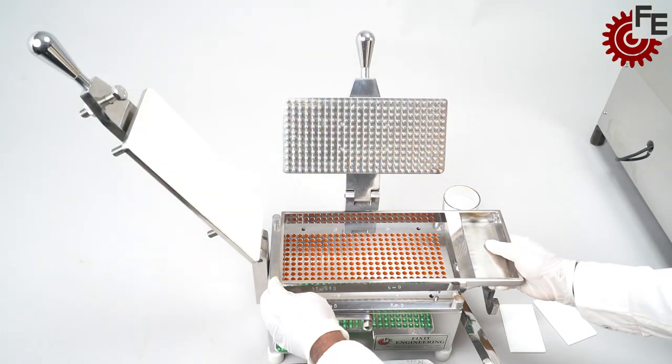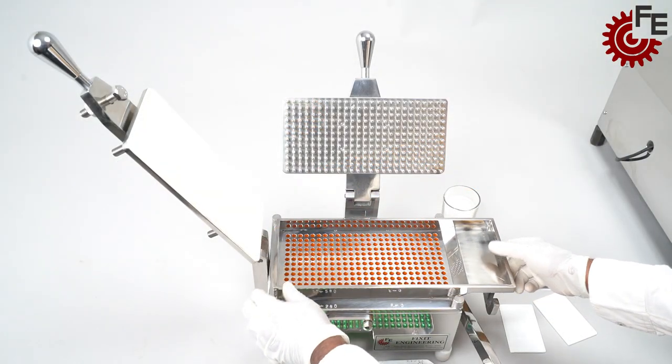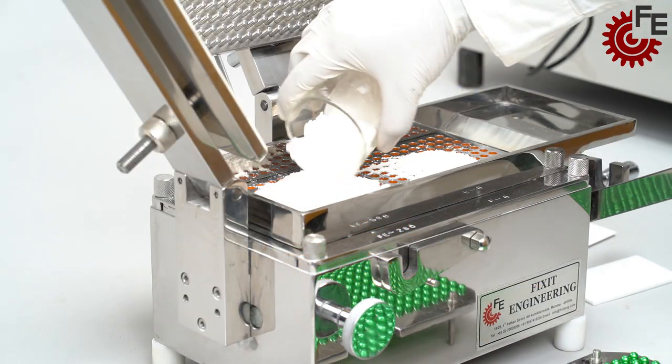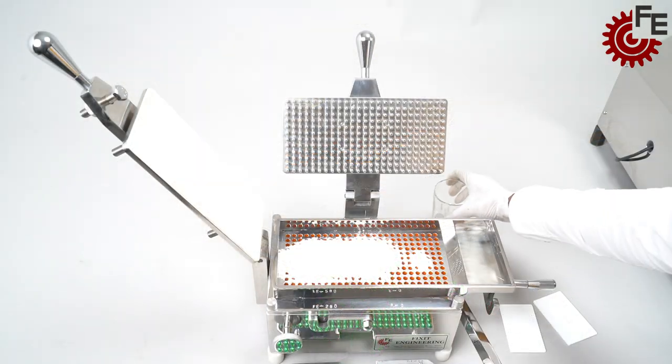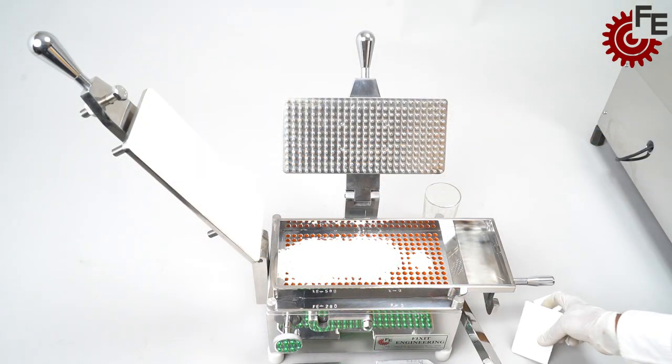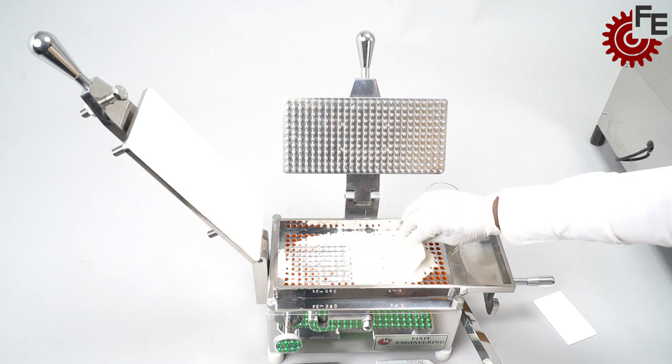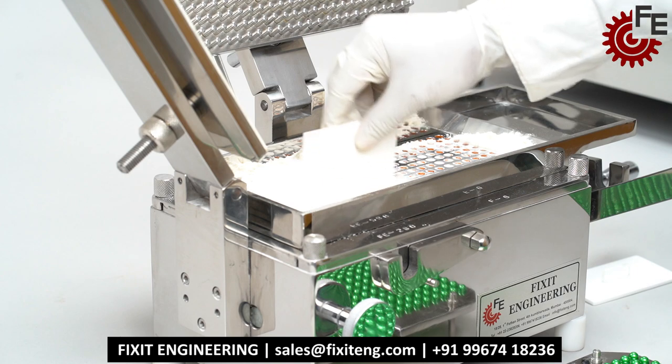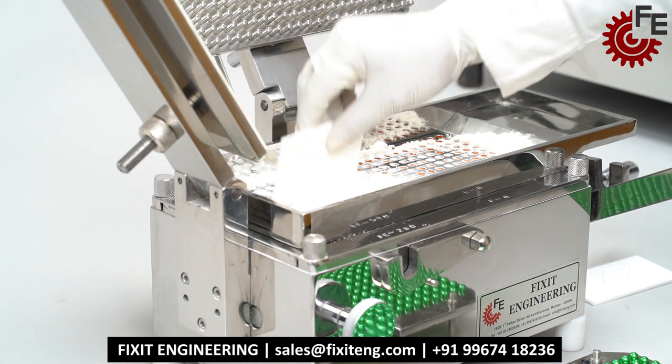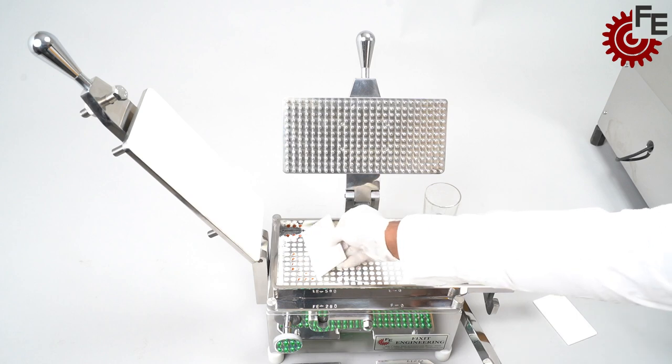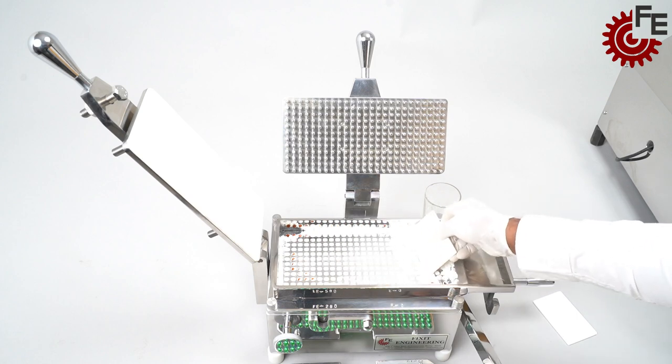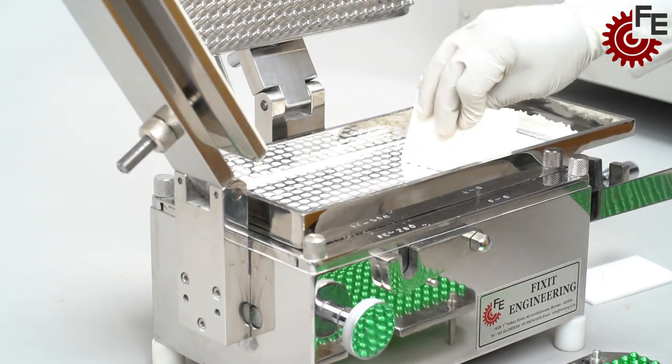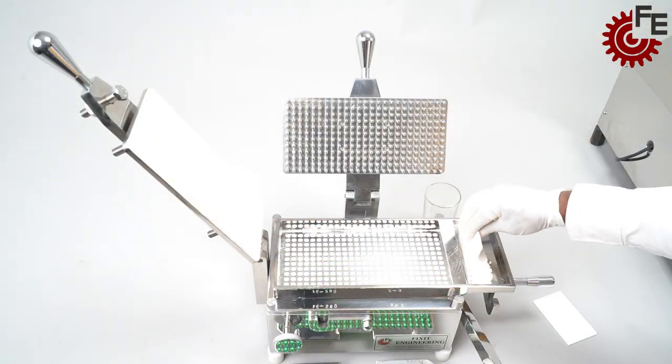Put the powder sprayer tray. Add measured quantity of powder. Spread powder across the tray using scraper. Excess powder can be scraped back on the guard.